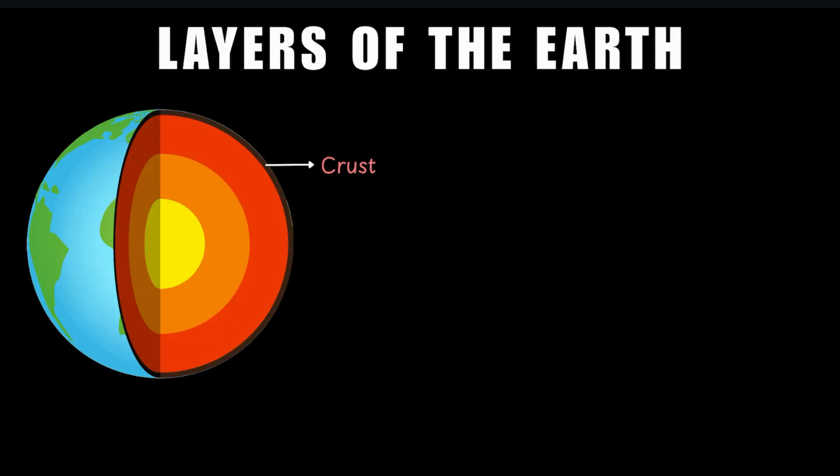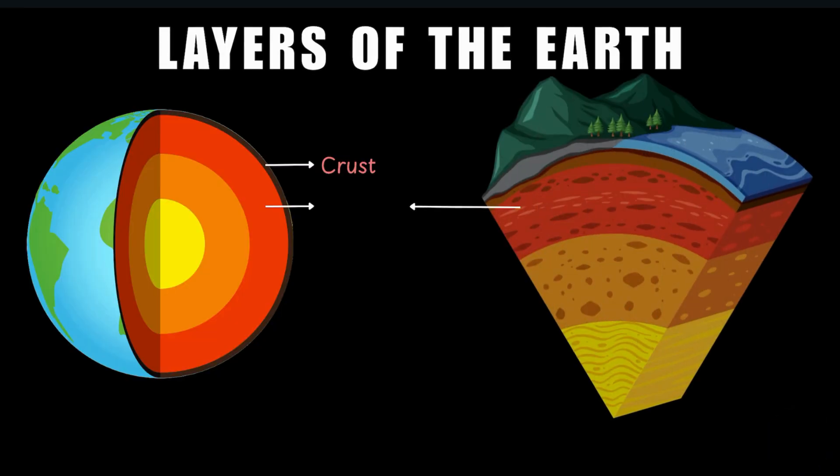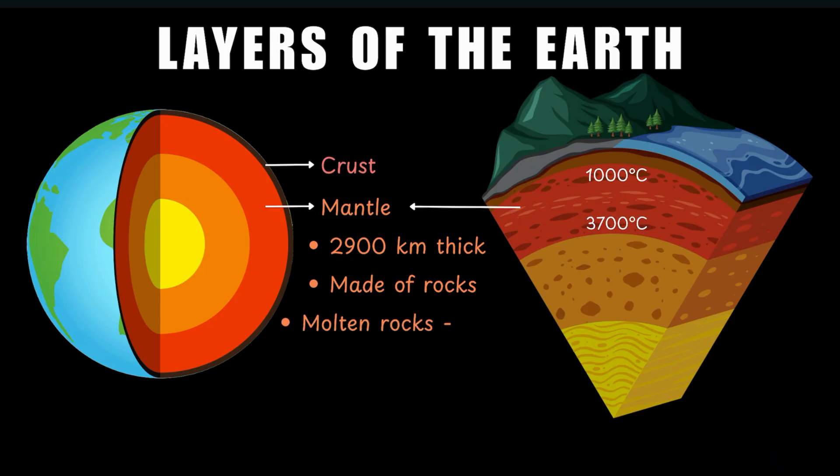Now, just below the crust, we have the mantle. And the mantle is about 2,900 kilometers thick. And like the crust, it too is made up of rocks. But the temperatures in the mantle layer are really hot, roughly 1,000 degrees Celsius near the top to about 3,700 degrees Celsius near the bottom. And at such high temperatures, the rock is partly molten. We call this molten rock magma.